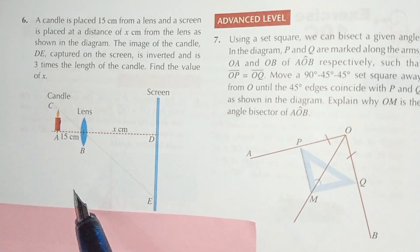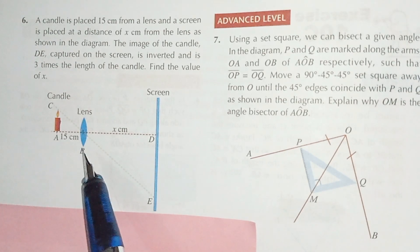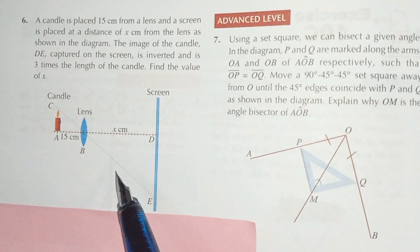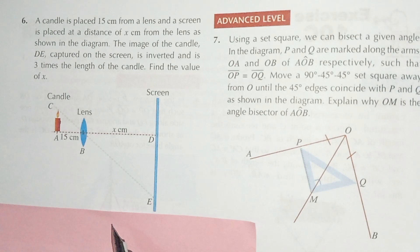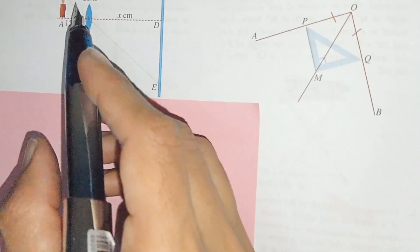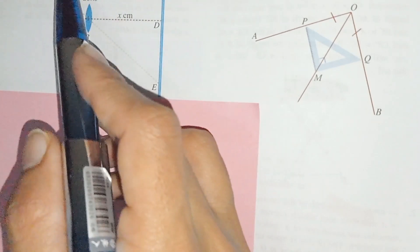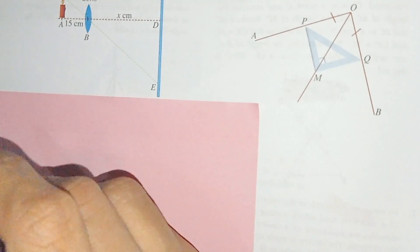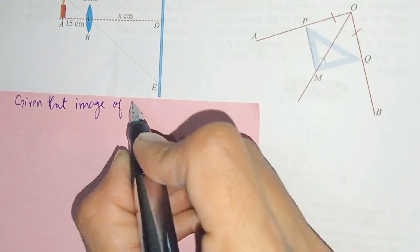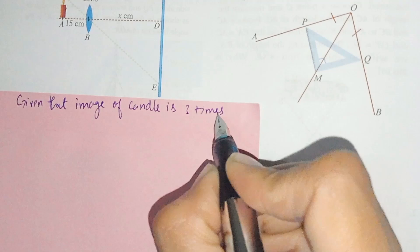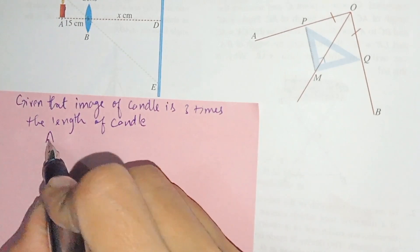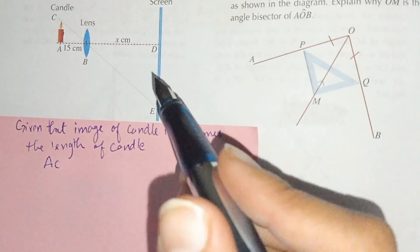Suppose the two triangles ABC and BDE are similar. When triangles are similar, the ratios of their corresponding sides are also equal. Since the image of the candle is three times the length of the candle, we can write AC over DE as one-third.